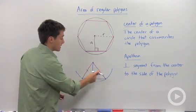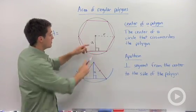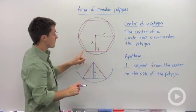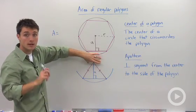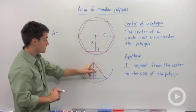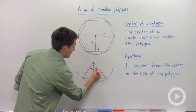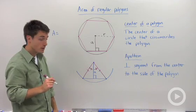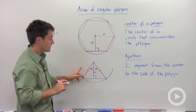So whenever you draw an apothem and segments to the vertices, you are going to create an isosceles triangle. One property of an isosceles triangle is if you have an altitude, you are bisecting that vertex angle. So remember that this apothem will bisect it, and you'll have two congruent base angles.